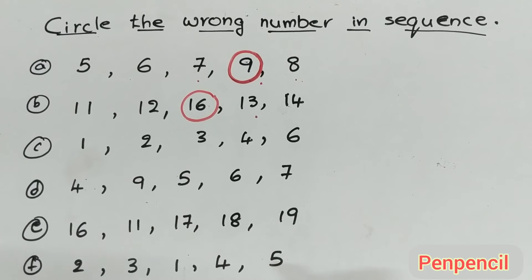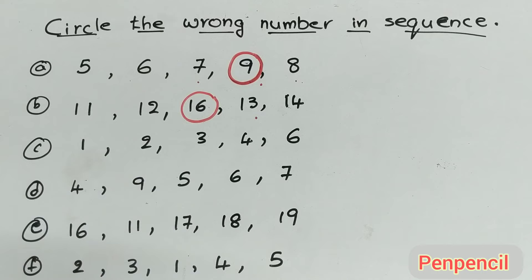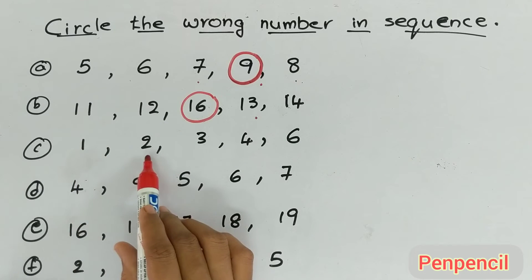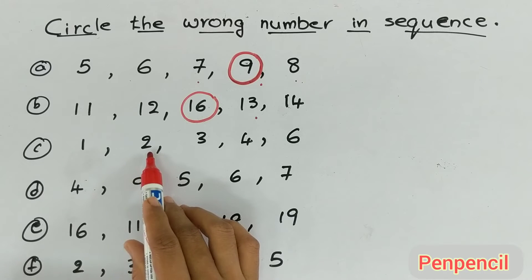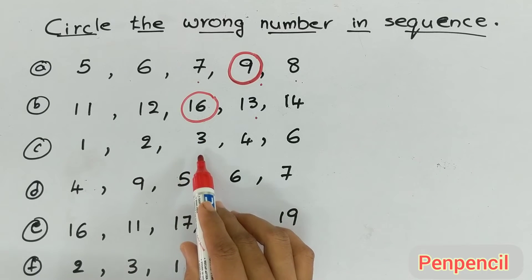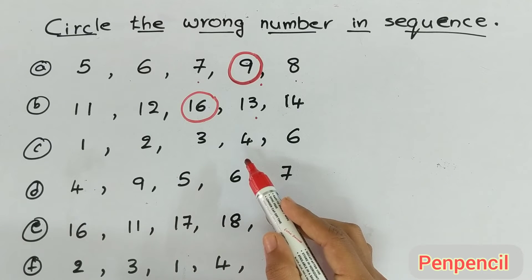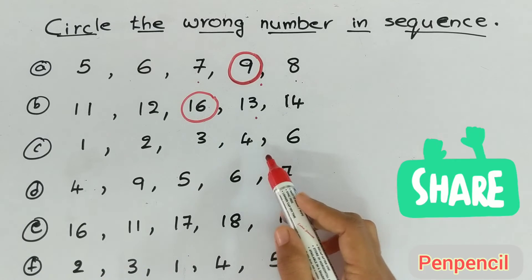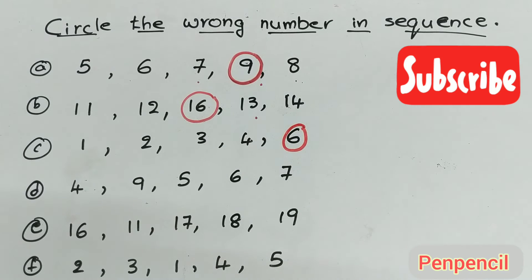Now come on, quickly do the third one. How many of you know what is the correct answer? Be fast — fastest finger first! Third one: 1, 2 — after 1, 2; after 2, 3; after 3, 4; after 4, 5 is the number. But here it is 6, so 6 is the wrong number.